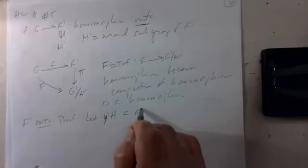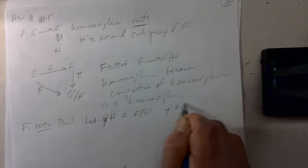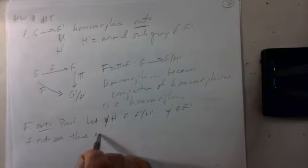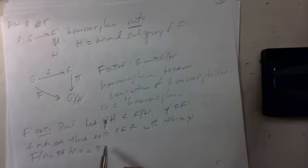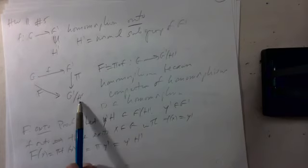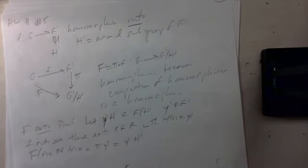The kernel of F is all x in G such that F(x) is the identity coset H′. F(x) = f(x)H′ = H′ means f(x) is in H′. So the kernel of F is exactly f⁻¹(H′), the inverse image of H′ under f.